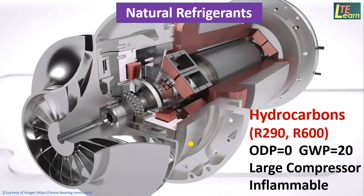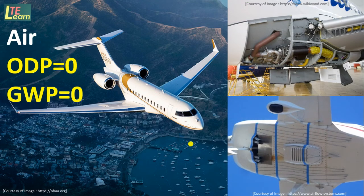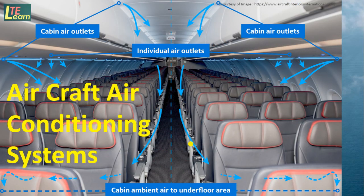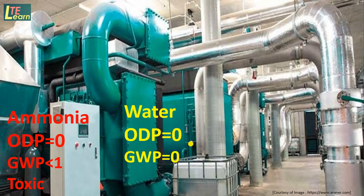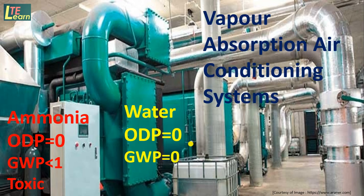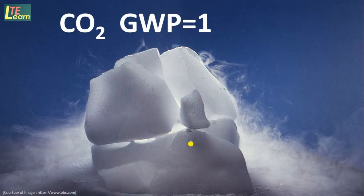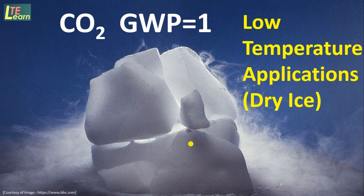Natural refrigerants such as hydrocarbons — propane and butane — are used in large compressors, but they are inflammable in nature. Air, because of its ODP and GWP of zero and its light weight, is used in aircraft air conditioning systems. Ammonia is used as a primary refrigerant and water as a secondary refrigerant in vapor absorption air conditioning systems. Carbon dioxide is used in low temperature applications as dry ice, but it has a limitation of critical temperature at 31 degrees Celsius.